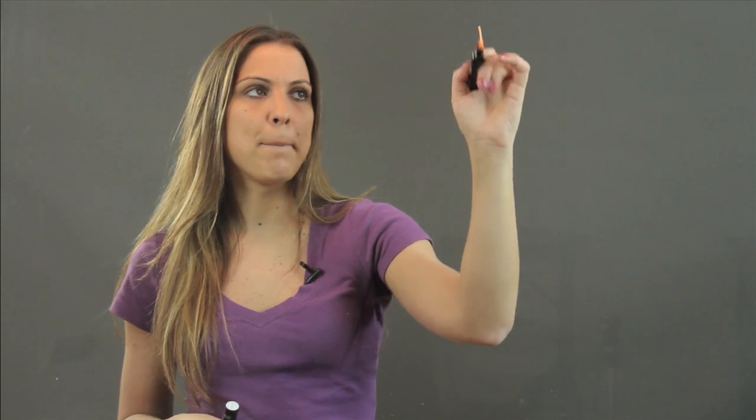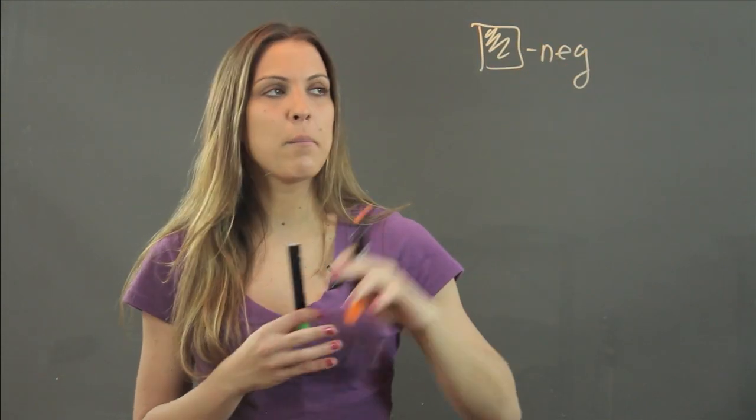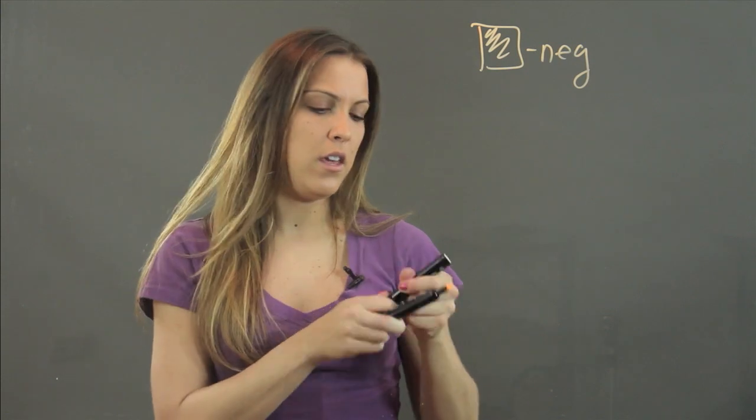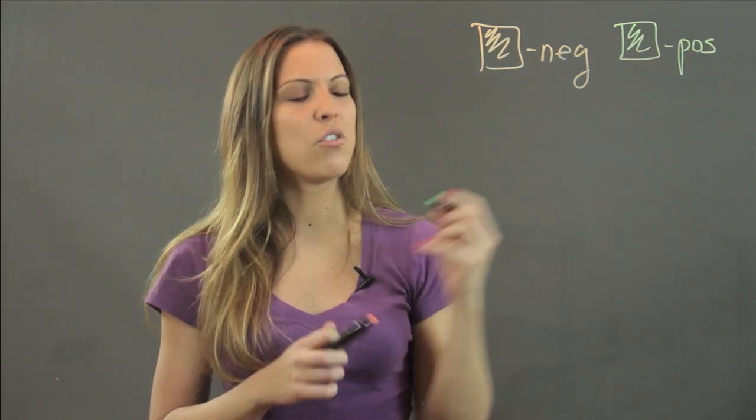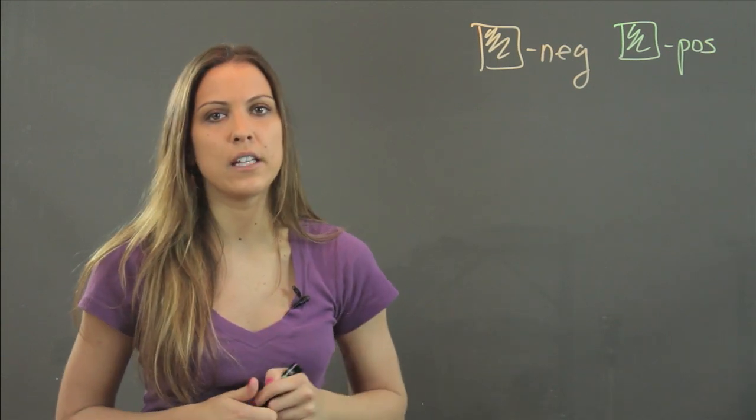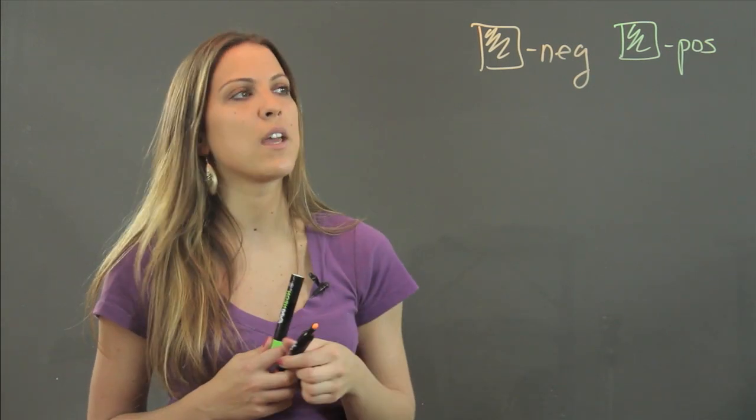So you might have, for example, the red, well, in our case, it'll be orange tiles. They can represent a negative number, and we can have the green tiles represent a positive number. And normally you have red representing negative and yellow representing positive with the color tiles you get in the classroom.